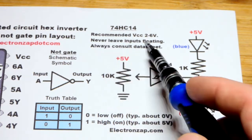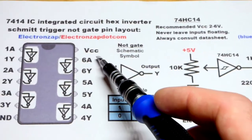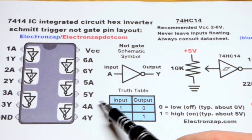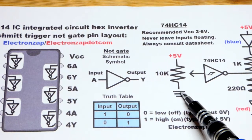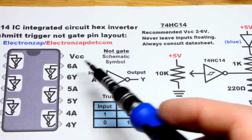Don't leave the inputs floating. You're going to see jumpers coming to all of the inputs we are not using. They're either going to the positive supply or the negative supply.